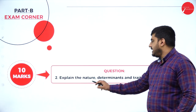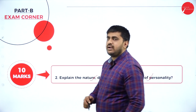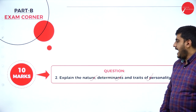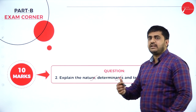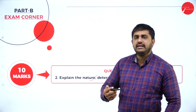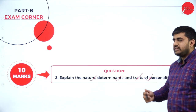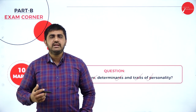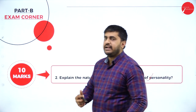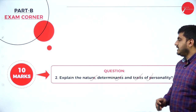Next Part B question: explain the nature, determinants, and traits of personality. Give one definition and meaning of personality, then explain the nature as specified in the notes. Then explain the determinants of personality — situation, socialization process, environment, heredity, etc. Then explain the traits of personality — there are five different traits such as agreeableness, extraversion, introversion, conscientiousness, and so on. This can be expected for 10 marks as well as 15 marks.